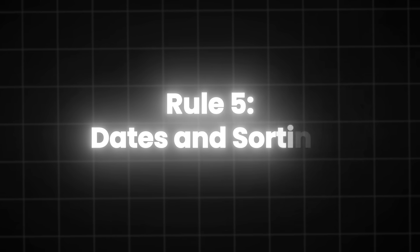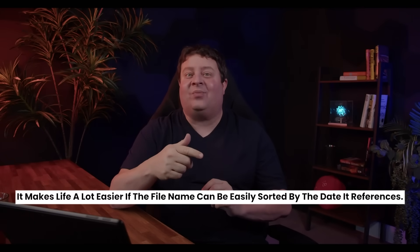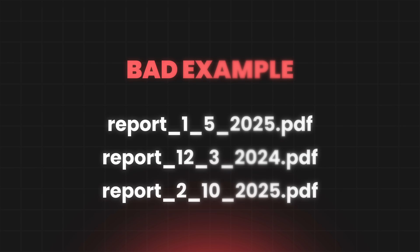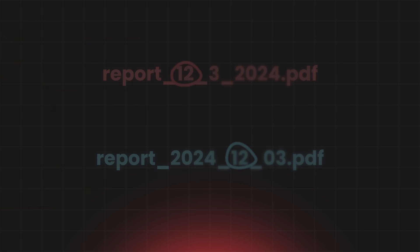Rule five is dates and sorting. Sometimes it makes sense to put a date as part of the file or directory name, like a log file containing information about a program running on a specific date, or a daily data dump of reporting information. It makes life much easier if the file name can be easily sorted by the date it references. But because of how numeric and alphabetic sorting work, these files will not sort chronologically if formatted incorrectly — each character is compared from left to right, and the 2024 report would show up out of order in ascending sorting.